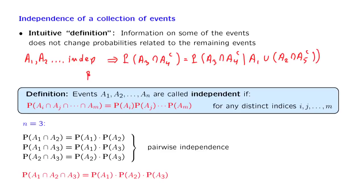In particular, we also have relations such as the following. The probability of event a3 is the same as the probability of event a3 given that a1 and a2 occurred, or the probability of a3 given that a1 occurred but a2 didn't.